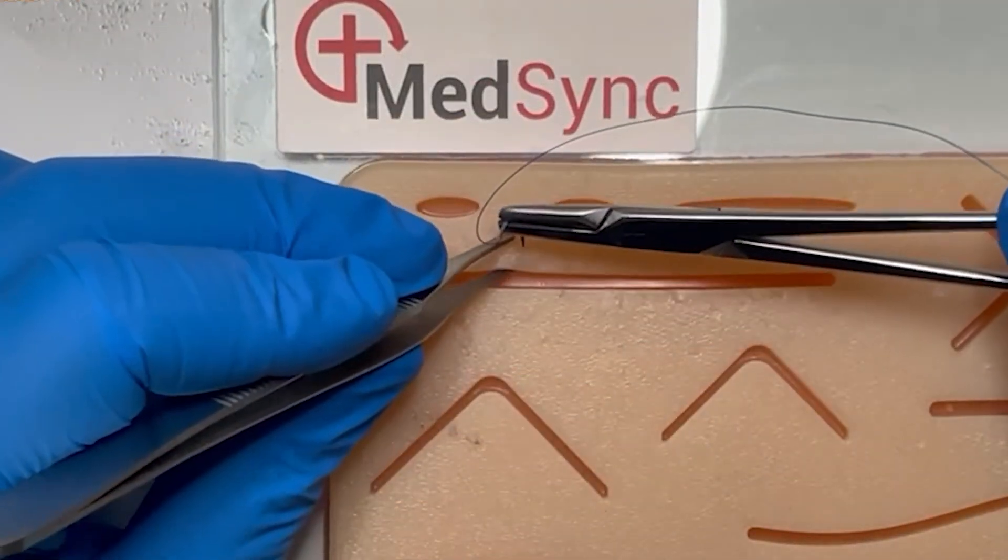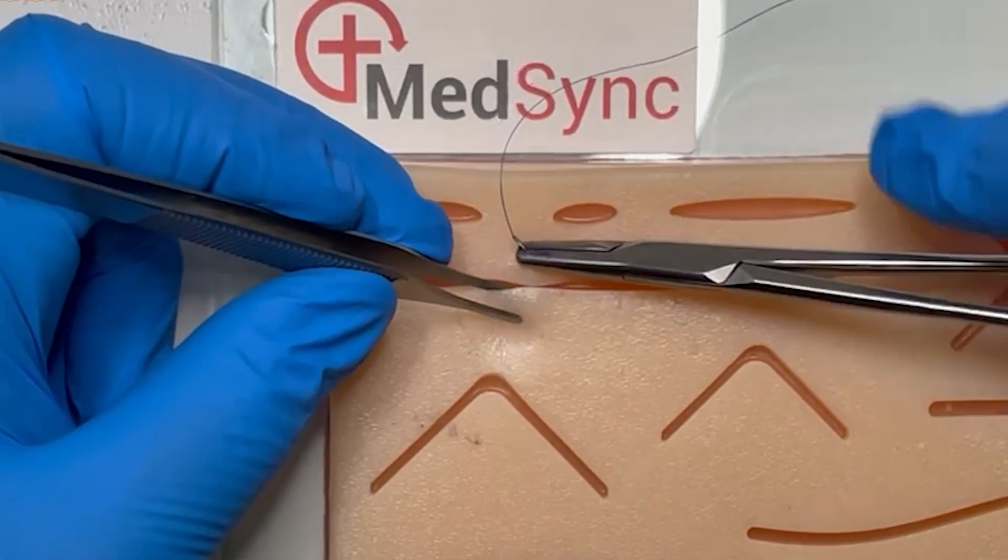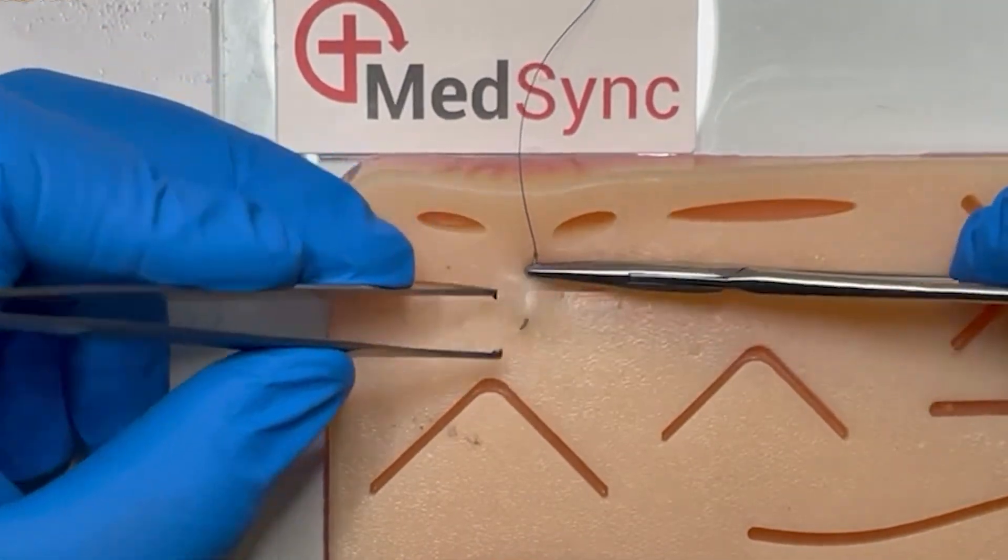In the first technique, with the needle two-thirds through the skin, you can retrieve it with your forcep, ensuring to follow its curve.